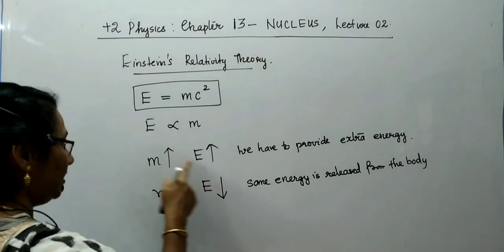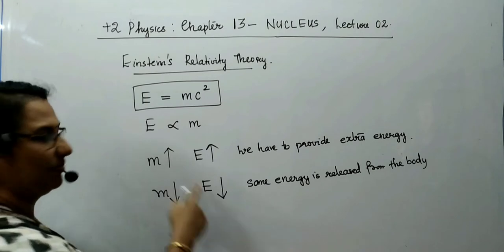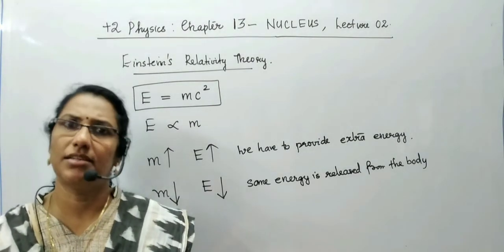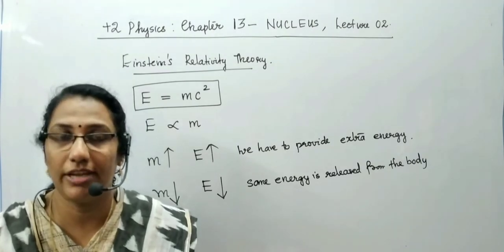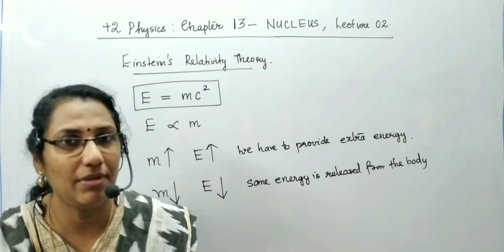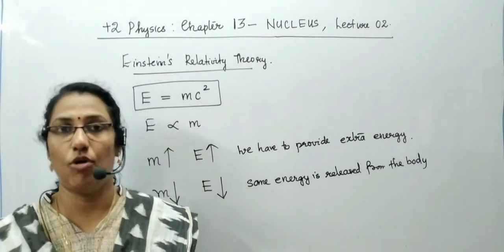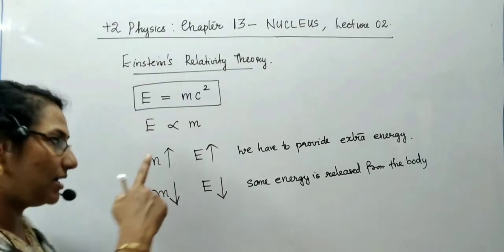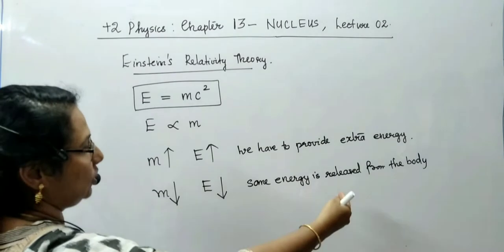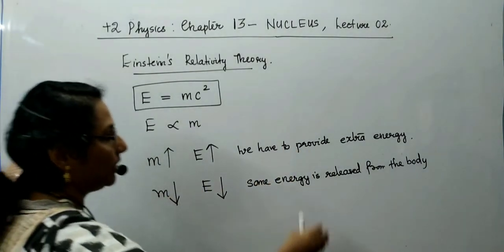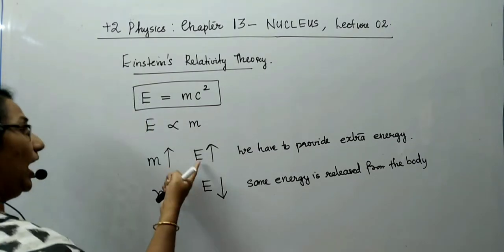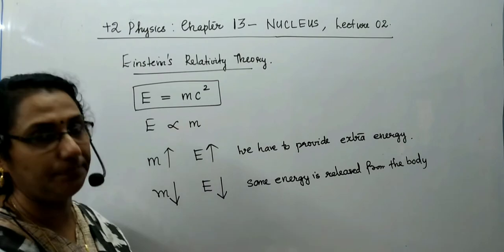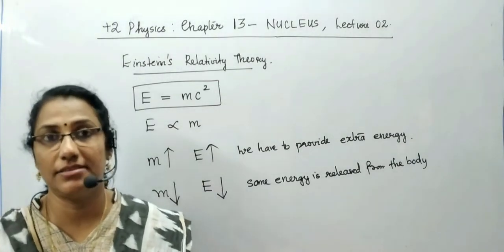And this is the concept obtained from Einstein's relativity theory. Therefore, we can say: less mass means less energy of the body; greater the energy, greater will be the mass. Energy and mass are the same thing. What is mass? Mass is the amount of energy a body possesses. If mass is decreased, some energy must be released from the body. When mass is increased, we have to provide extra energy to the body.